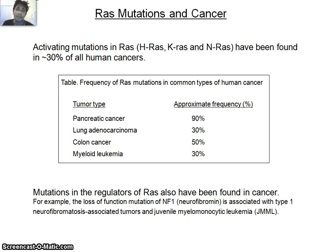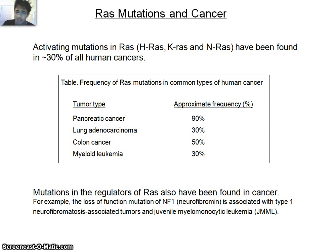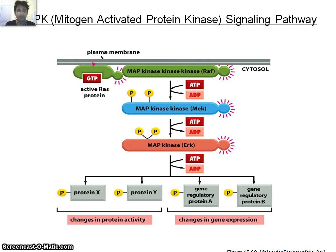RAS mutations are found in cancer. The RAS superfamily — including HRAS, KRAS, and NRAS — has been found mutated in 30 percent of human cancers, and especially in 90 percent of pancreatic cancers. RAS is also involved in lung cancer, colon cancer, and myeloid leukemia. Mutations in regulators of RAS, such as loss-of-function mutations in neurofibromin (NF1), are associated with type one neurofibromatosis and juvenile myelomonocytic leukemia.